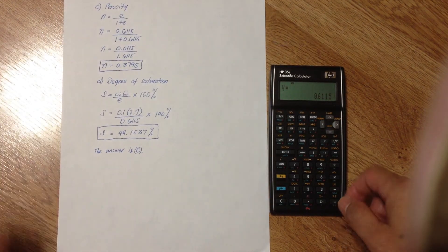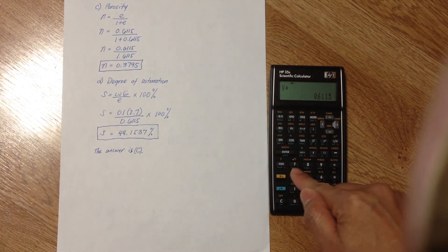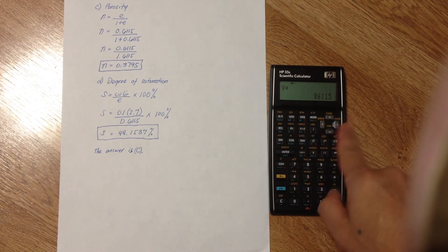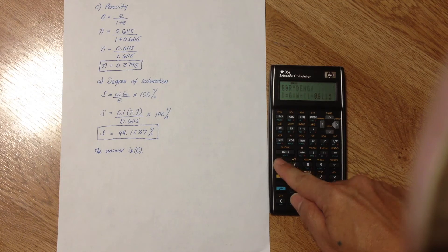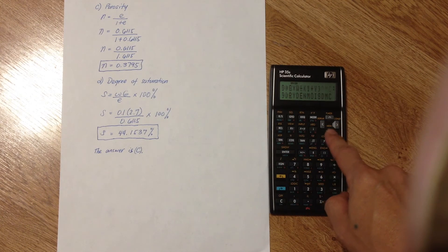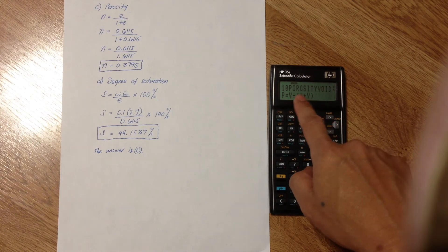Next, porosity. Use equation number 10. Go back to the equation list. Press EQN. And then, go to equation number 10. There's equation number 10.